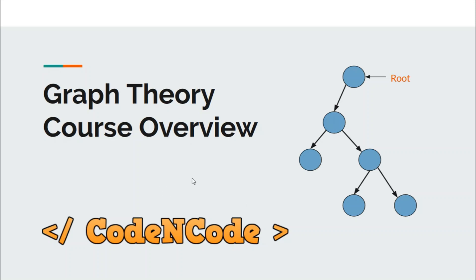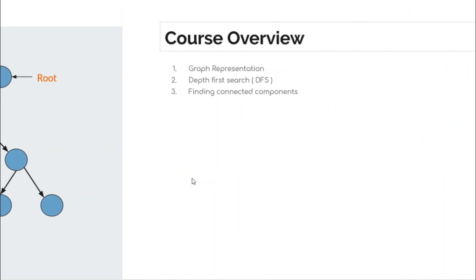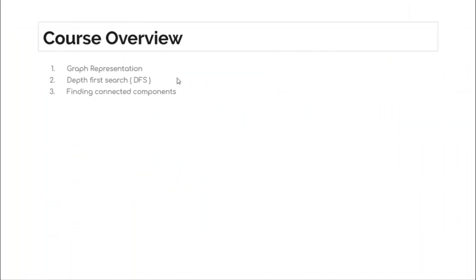Let's start. First, we will be studying about the representation of graphs. There are three kinds of representation but we will study only two: the first one is the adjacency list method and the other one is the adjacency matrix method of graph representation.